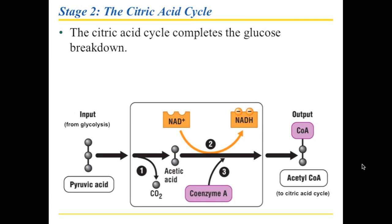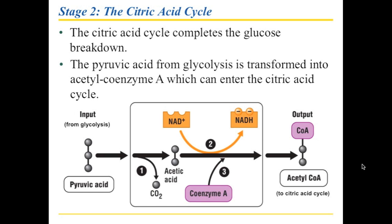The first thing we need is a preliminary step. The preliminary step means that the pyruvic acid that we end up with from glycolysis can't just fit right away into the citric acid cycle. So what we need to do is refine it a little bit.